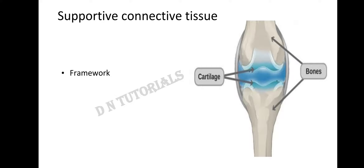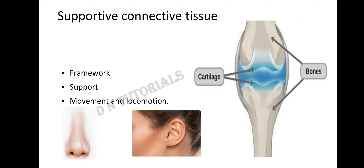These two structures — bones and cartilage — are responsible for giving our body its proper shape. Supportive connective tissue provides both framework and support. Bones are present everywhere in the body and make the skeletal system. Cartilage is present between bones, at joints, and also at the nose and the ear.